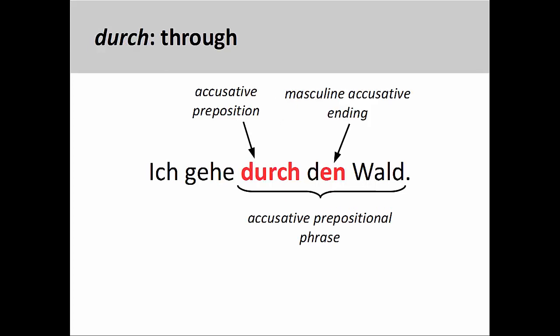As we have seen in an earlier presentation, durch means through, as in Ich gehe durch den Wald — I go through the forest. The masculine accusative ending on the definite article reveals that everything between the preposition and its object is in the accusative case.